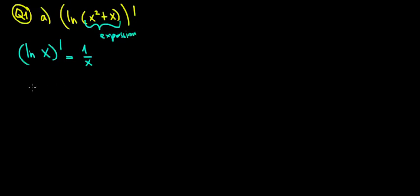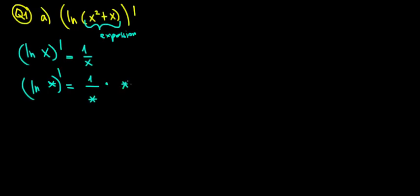Whenever we have an expression, we have to use the chain rule. Let's give a symbol for our expression — let's put a star. So instead of x, we have a star. If we differentiate it, we keep the same logic: 1 over our expression (our star), times the derivative of our star. This is what the chain rule means — we differentiate the expression itself, the function of our variable.